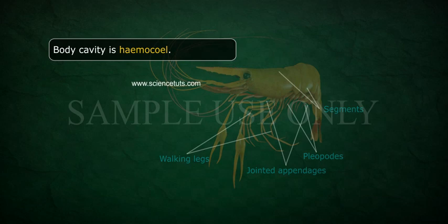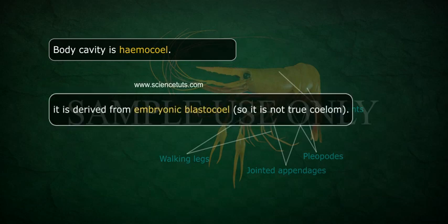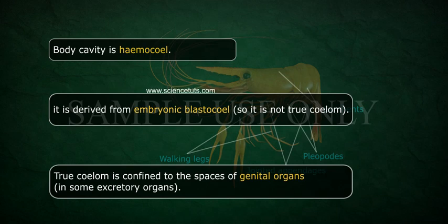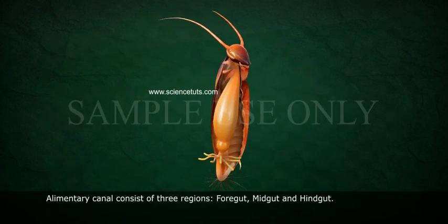The body cavity is a haemocoel, derived from the embryonic blastocoel. It is therefore not a true coelom. The true coelom is confined to the spaces of genital organs and some excretory organs.